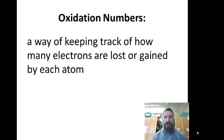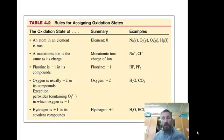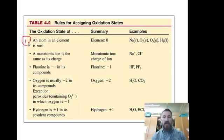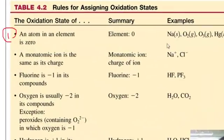Oxidation numbers are a way of keeping track of how electrons are lost or gained by each atom. Here are the five main rules. Rule number one: an atom of an element has an oxidation number of zero. For example, sodium, oxygen, ozone, or mercury — in every single one of those, the oxidation number would be zero.